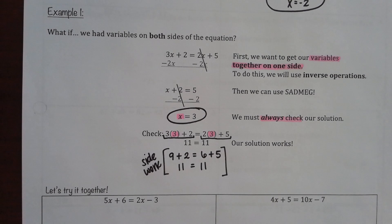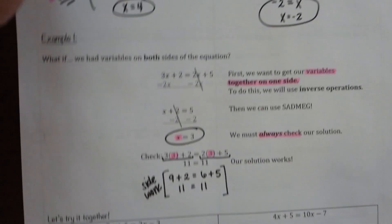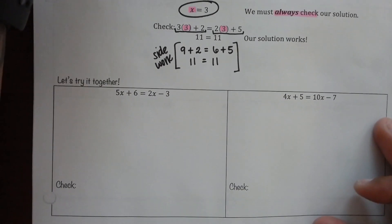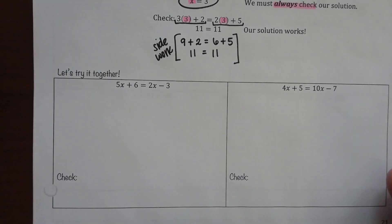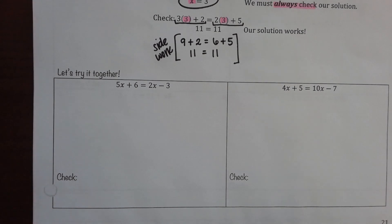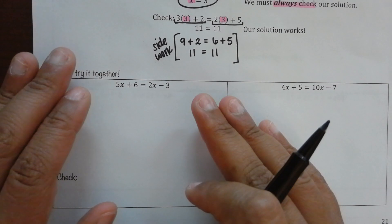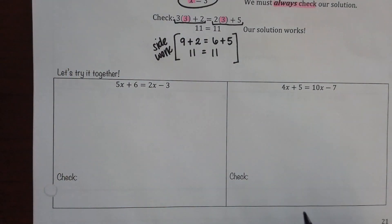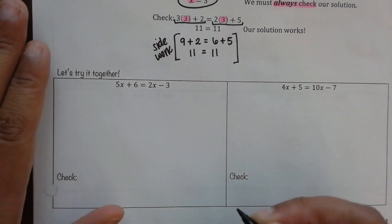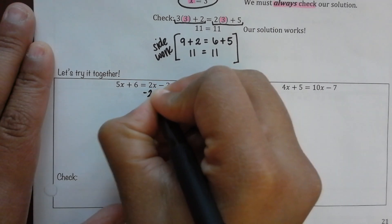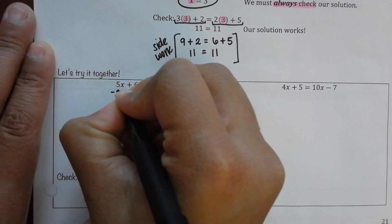So, if I'm looking at the first one, it says 5x plus 6 equals 2x minus 3. Are my variables on both sides? Yes. What are my two variable terms? Which one's smaller, 5 or 2? 2. So, how would I move a positive 2x? By making it negative — subtracting on both sides.